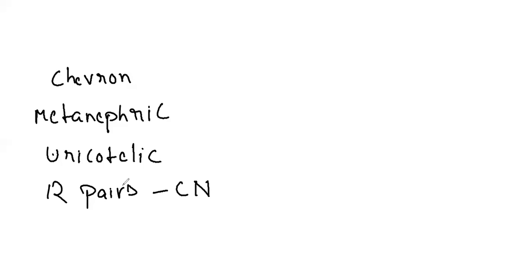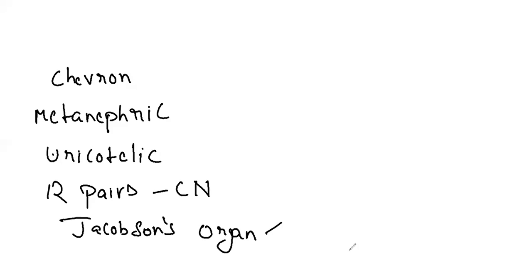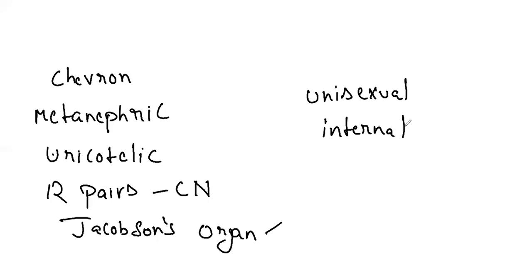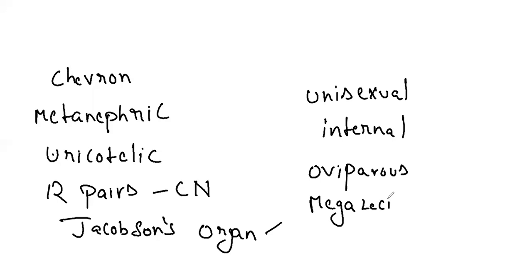On the roof of the buccal cavity, Jacobson's organ is present, which is used for olfaction. A single cloaca is present. These organisms are unisexual. Fertilization is internal. One or two penises are found in males as copulatory organs — unlike frogs, where male copulatory organs are absent. Mostly oviparous, but some are viviparous. The eggs are megalecithal and telolecithal (yolk concentrated toward one side). The eggs are cleidoic with leathery coverings.